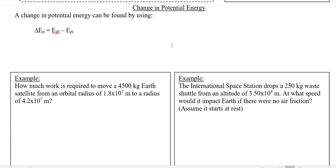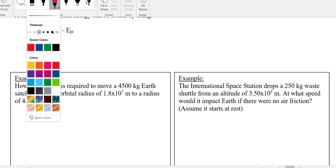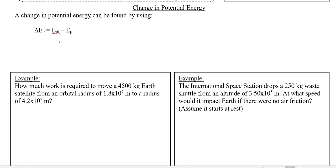Let's talk about changes in potential energy, because this is really where this stuff is going to be important. If we have a satellite and I want to stick it up into space, how much work is going to be required to get it there? Or if I have something falling from space, like a meteorite, and it's going to crash into the Earth, how fast might it be traveling when it reaches the surface? So this is all going to be related to changes in potential energy.